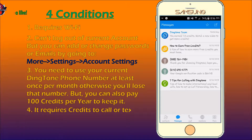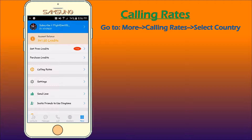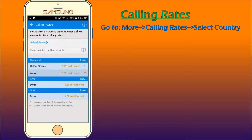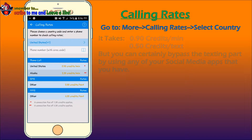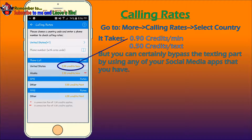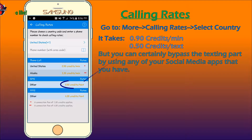The third condition is you have to use your Dingtone phone number at least once a month. Because if you don't, then you will lose that phone number, unless you pay 100 credits per year. The fourth condition is that instead of money, this app uses a currency called credits. There is something called calling rates. To view the calling rates, simply go to the More tab and press Calling Rates. Select the country code. Depending on the person's country code, you may have to use more or less credits. For example, in the United States, it takes 0.9 credits per minute for calling and 0.5 credits per text.